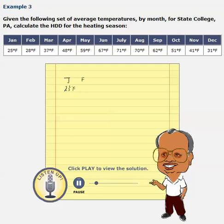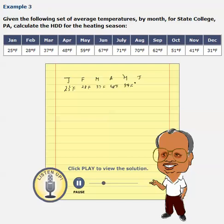For February, the outside temperature is 28 degrees Fahrenheit. March is 37 degrees Fahrenheit. April is 48 degrees Fahrenheit. May, the temperature outside is 59 degrees Fahrenheit. And June, the outside temperature is 67 degrees Fahrenheit.